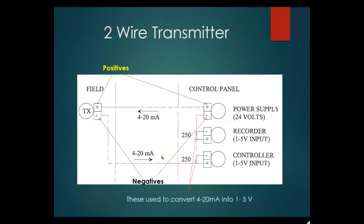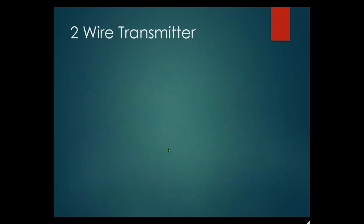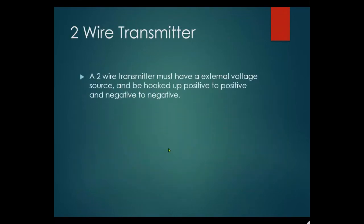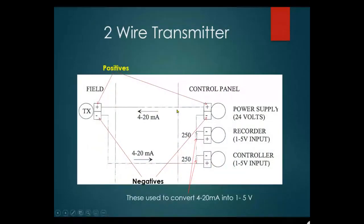Two-wire transmitters must have an external voltage source and be hooked positive-to-positive and negative-to-negative throughout the loop. Going through the devices you go positive to negative, then negative to positive, then positive to negative — and the negatives meet up at the end of the loop. The 250 ohm resistors provide the 1 to 5 volt signal conversion.